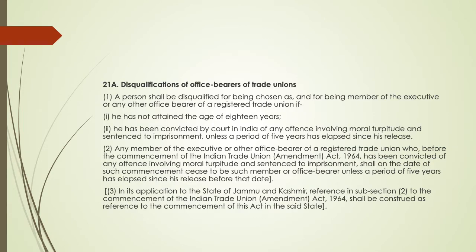Section 21A, disqualifications of office bearers of trade unions, states in subsection 1 that a person shall be disqualified for being chosen as, and for being a member of, the executive or any other office bearers of a registered trade union if: first, he has not attained the age of 18 years.